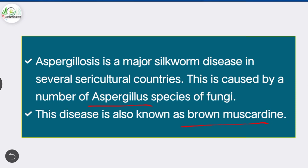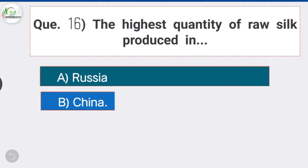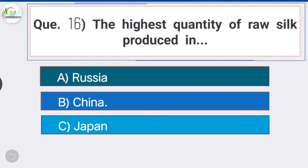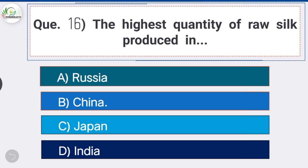Question number sixteen: the highest quantity of raw silk is produced in — option B is the correct answer — China. The highest quantity of raw silk is produced in China. India is the second largest producer of silk in the world.